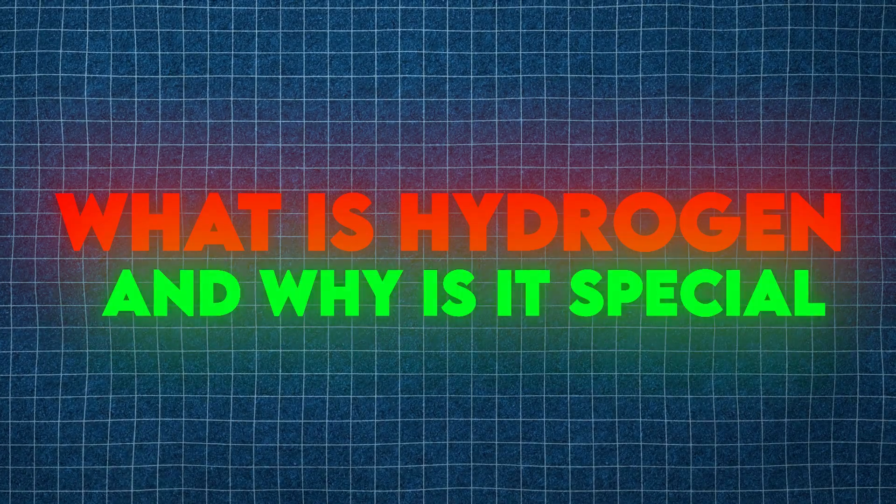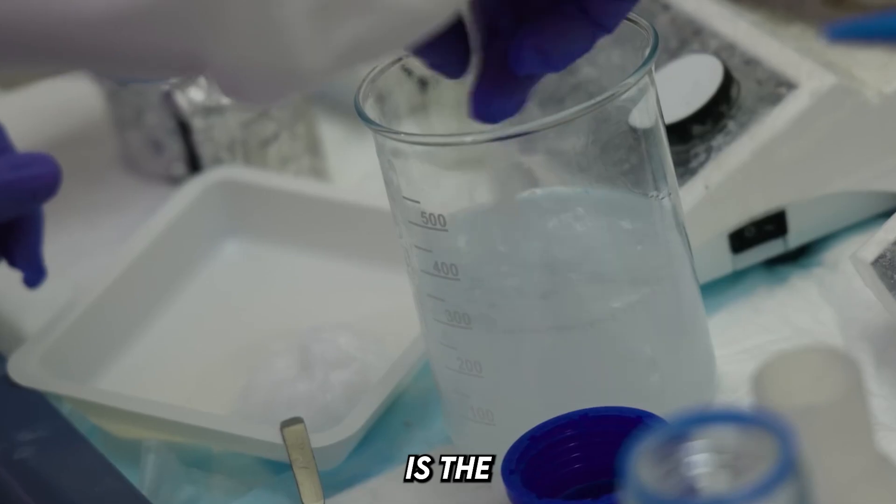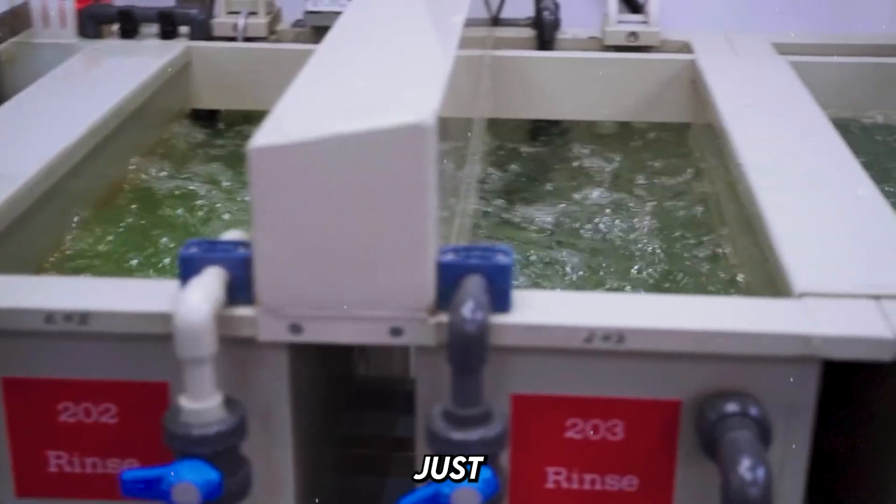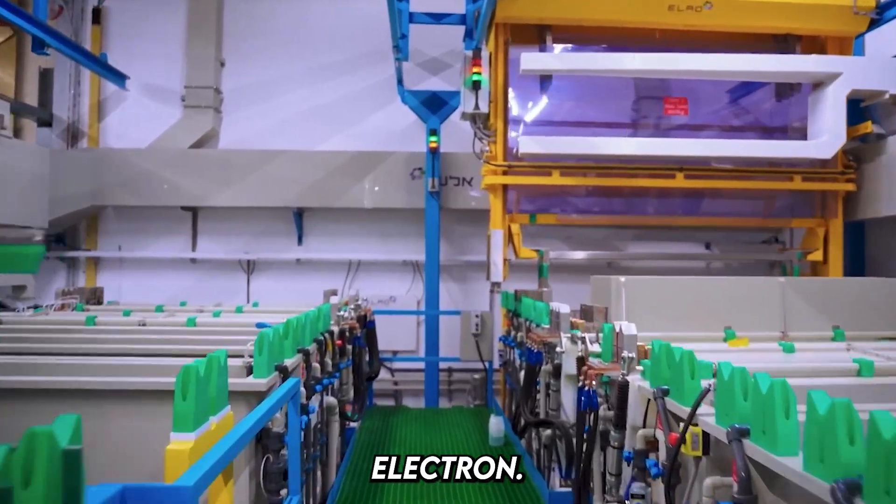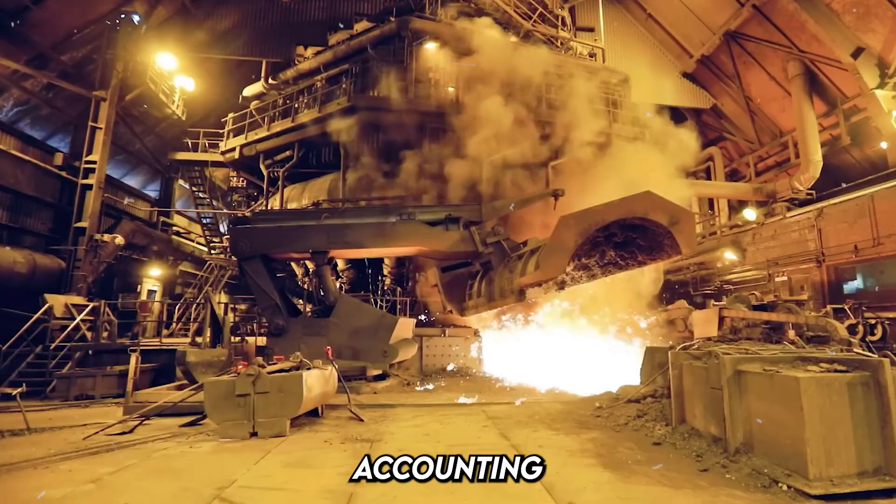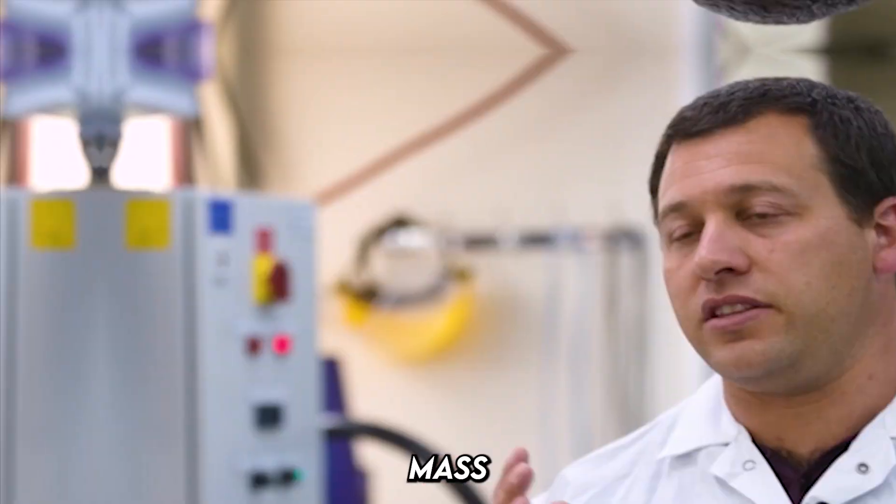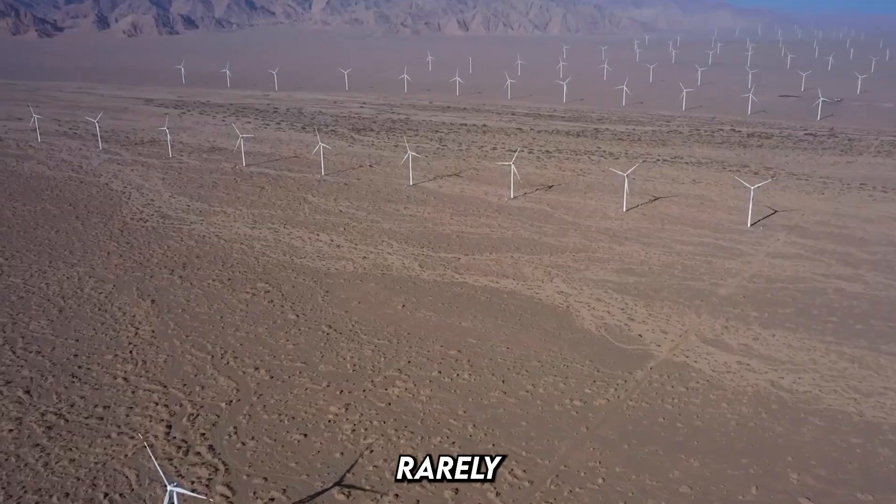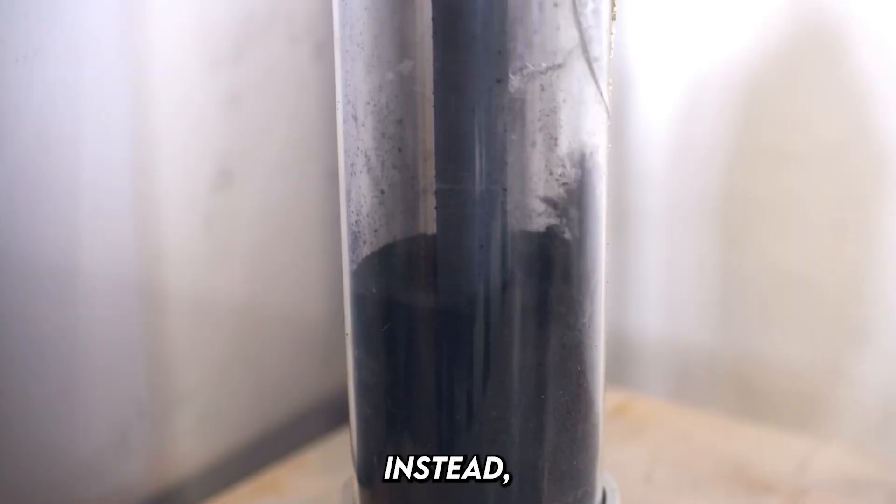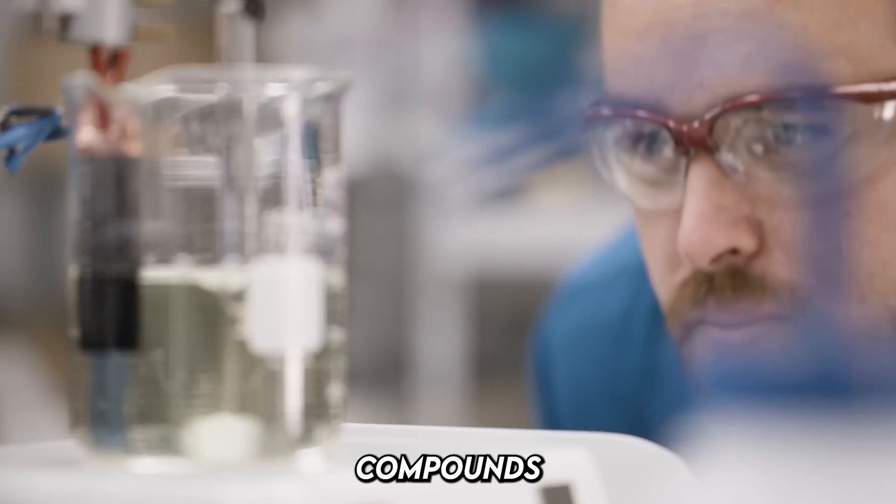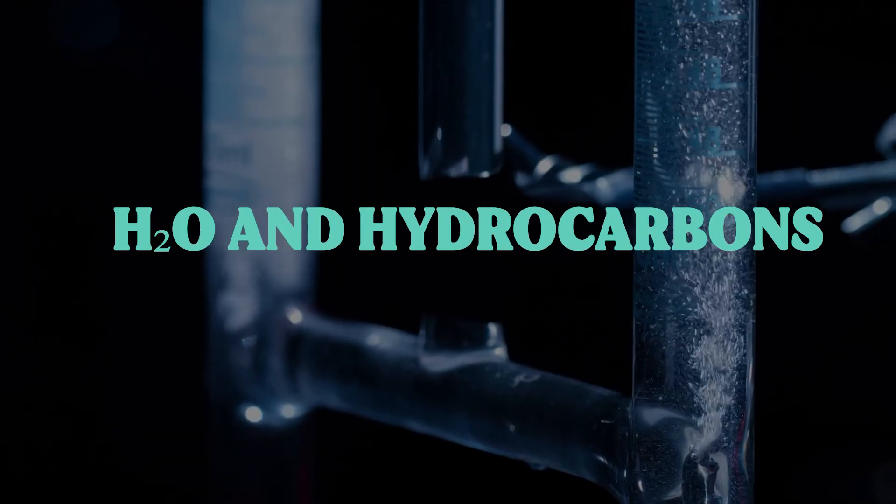What is hydrogen and why is it special? Hydrogen is the simplest atom, consisting of just one proton and one electron. It's also the most abundant element in the universe, accounting for 75% of its mass. On Earth, hydrogen is rarely found in its pure form. Instead, it exists as part of compounds like water, H2O, and hydrocarbons.